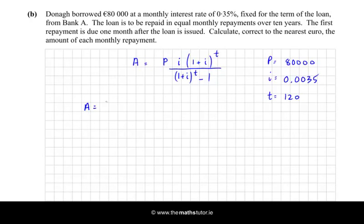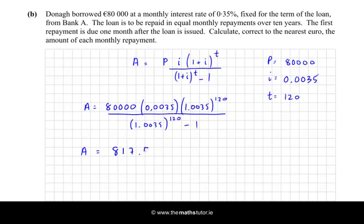So I can put all that into the calculator as follows. So it's 80,000 times 0.0035 times 1.0035 to the power of 120, all over 1.0035 to the power of 120, take away 1. And what do we get? We get 817.587. And we are asked to calculate that correct to the nearest euro, so A is going to be in euros 818. And that's our final answer. That is the equal monthly repayment.